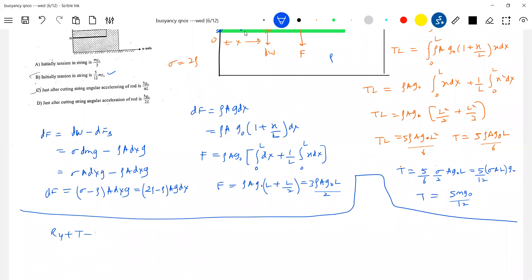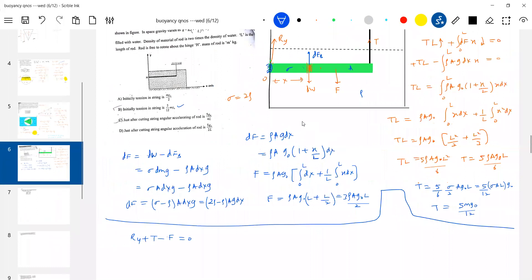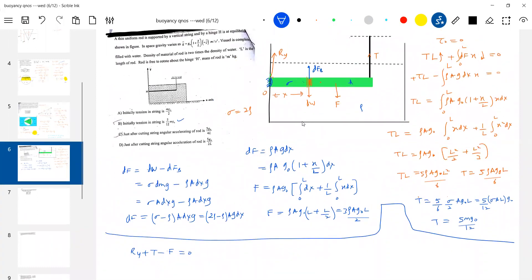R y plus T total force. Let it be equal to zero. You can calculate the reaction at the hinge. I think total is visible. See it carefully. So what is R y? R y will be reaction at the hinge. After this, just after cutting the string, angular acceleration of the rod. How to bring this? What all torque? Torque will be set up by only this one. This resultant force only will set up a torque.